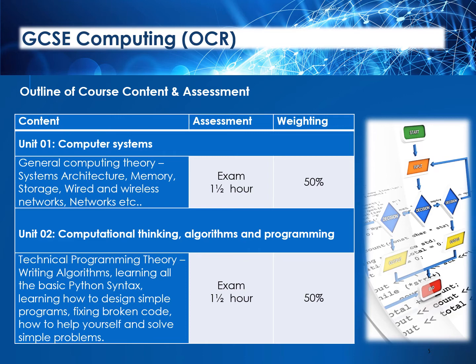Firstly, Unit 1, Computer Systems, which focuses on general computing theory such as systems architecture, memory, storage and so on. The second unit is Computational Thinking, Algorithms and Programming, where pupils will learn to write algorithms, learn basic Python syntax, and learn how to write simple programs and be able to debug them. The course will be a mixture of Unit 1 and Unit 2 throughout Years 11 and 12. Both exams will be taken at the end of Year 12 and pupils will have a chance to start programming after the first few weeks of Year 11. There is also a programming project to complete in Year 12, but this does not form part of the assessment anymore.